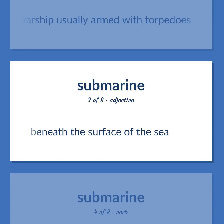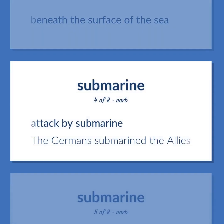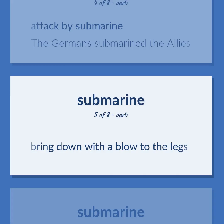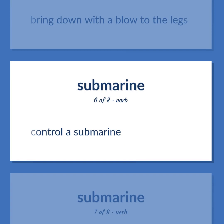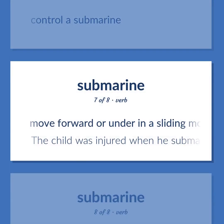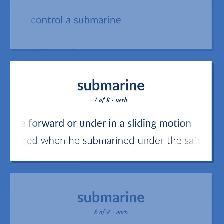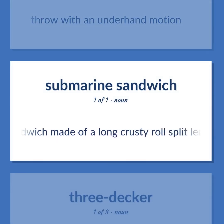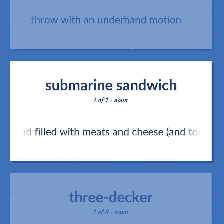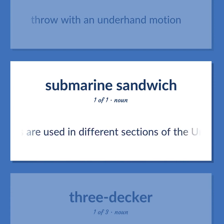Submarine (verb): beneath the surface of the sea. Also: to attack by submarine. Example: the Germans submarined the Allies. Also: to bring down with a blow to the legs. Also: to control a submarine. Also: to move forward or under in a sliding motion. Example: the child was injured when he submarined under the safety belt of the car. Also: to throw with an underhand motion.